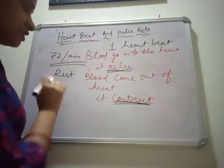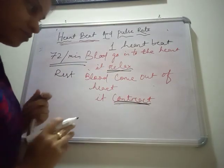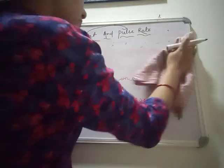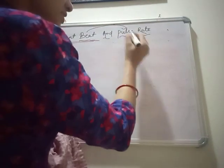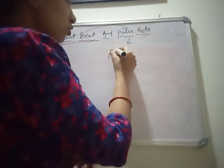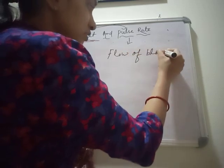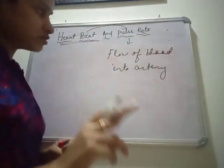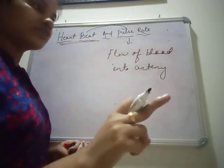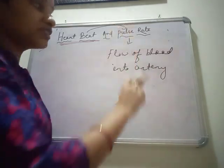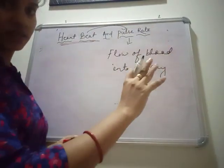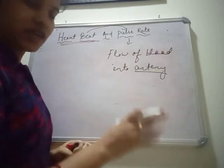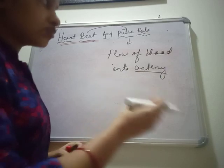This heartbeat per minute and pulse rate are somehow the same, but heartbeat is not the same as pulse rate. Pulse rate is the flow of blood into our vessels. Heartbeat is the relaxation and compression of the heart. But pulse rate is when the heart contracts and blood comes out through the artery, flowing through the artery at high pressure, and that creates a throbbing sound. That throbbing sound is called your pulse rate.